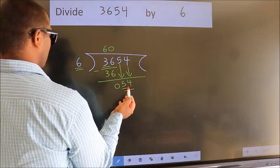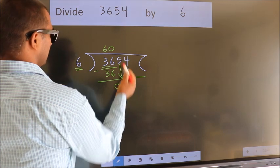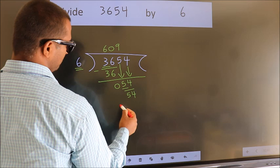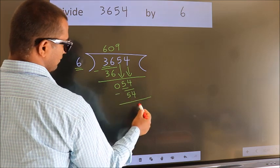When do we get 54 in the 6 table? 6 nines, 54. Now we subtract. We get 0.